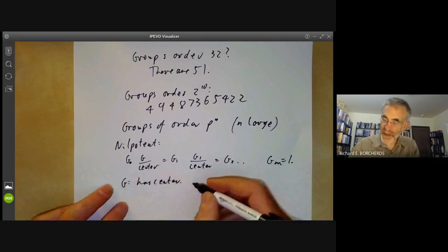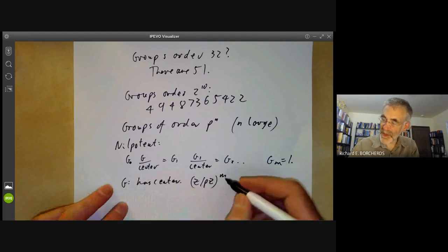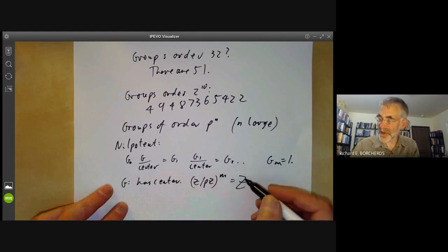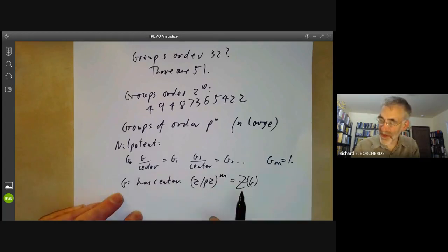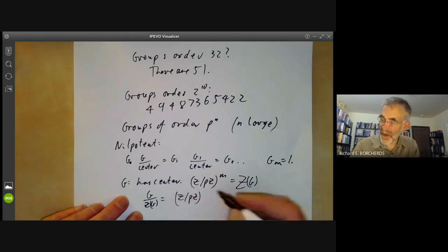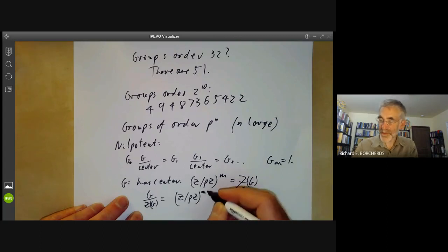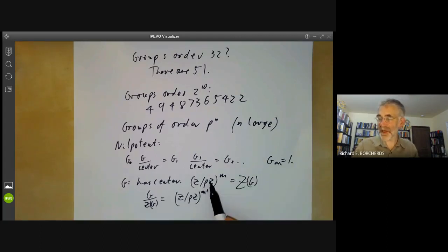So we're going to take G has a center of the form Z modulo pZ to the m. Let's call this the center of G. And as I said, Z is used for both the center of G and for the integers, I'm sorry about that, I can't do anything much about it. It's standard notation for both. And we're going to take G modulo the center of G to be another group Z over pZ to the power of, let's not overuse this letter n, let's call this m prime.